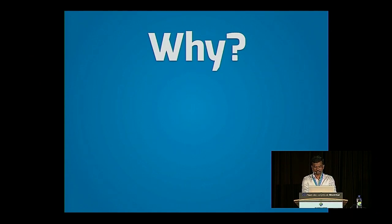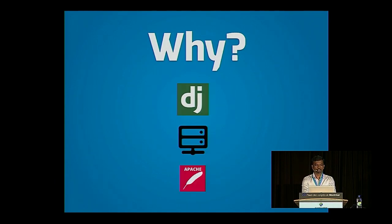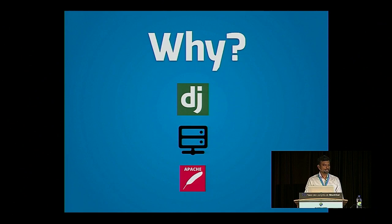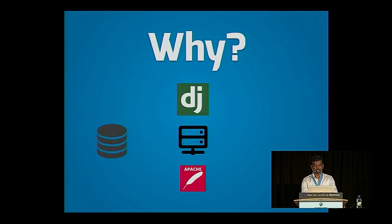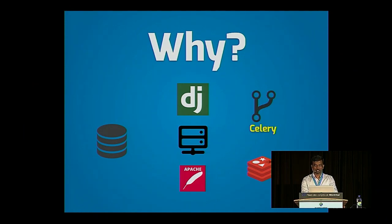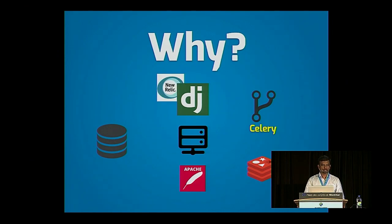Let's get started by explaining a typical web stack. You have your front-end server — Apache or Nginx — and your back-end server like Unicorn, UWSGI, or ModWSGI. Then you run Django on top of that. You also have your database, which could be Postgres or MySQL, your caching layer, your background task manager, and if you're a New Relic customer, New Relic to monitor all of these different pieces.